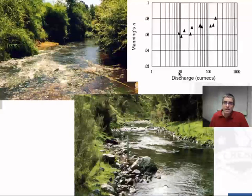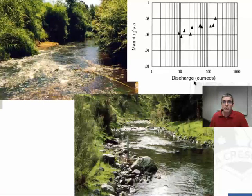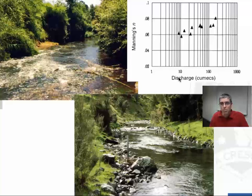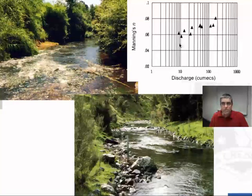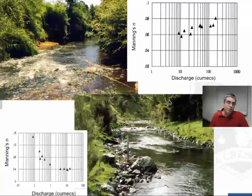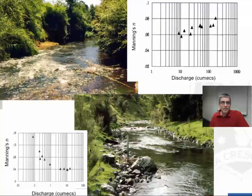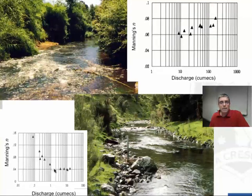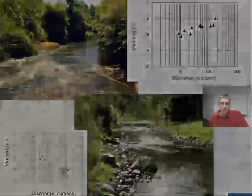This is Manning's n as a function of discharge plotted on a linear log plot, and it increases with discharge. And in this bottom picture, we see that Manning's n decreases for lower discharges, and then stabilizes for higher discharges.